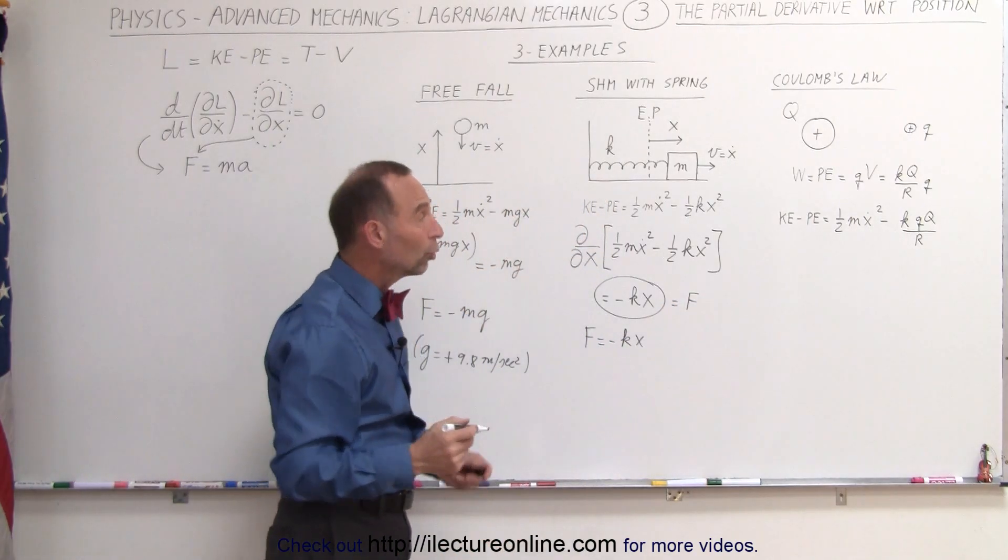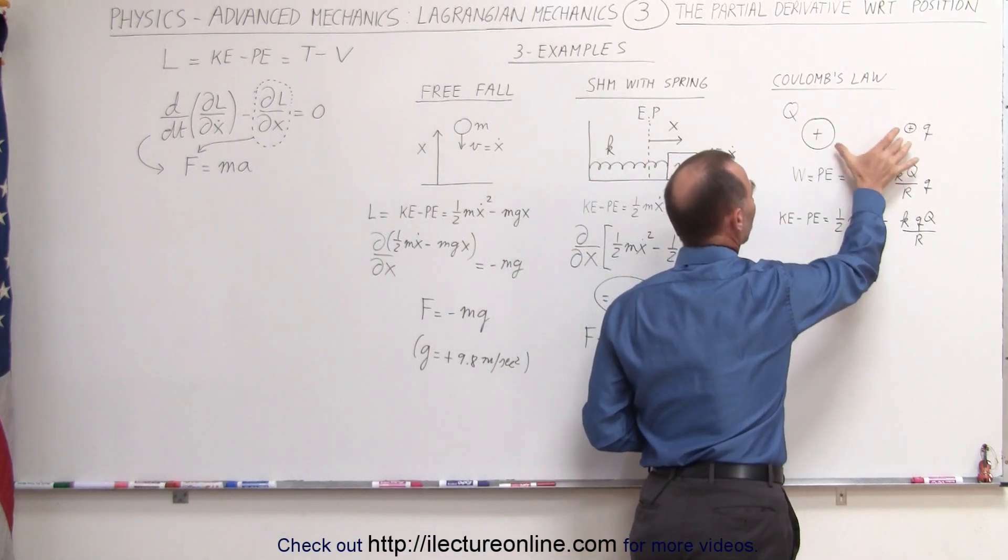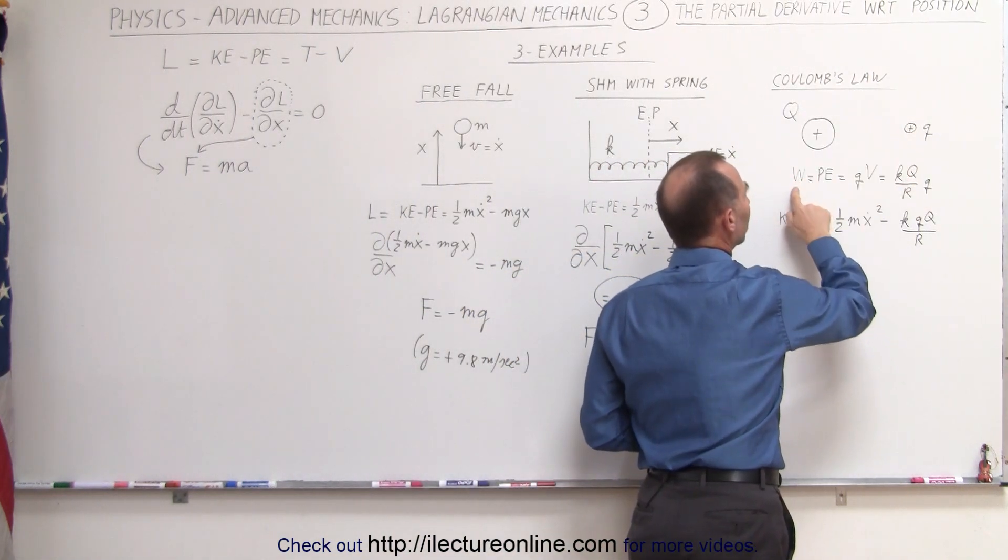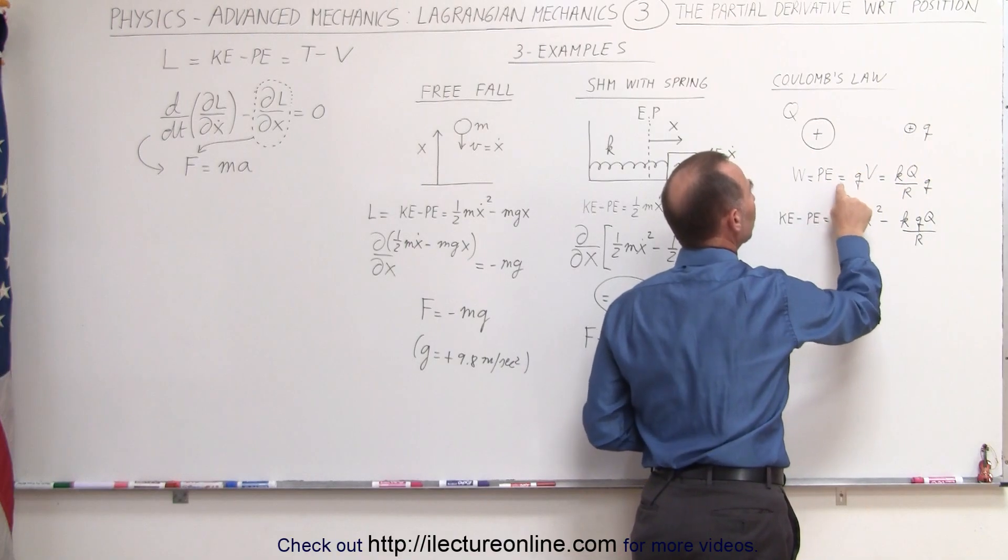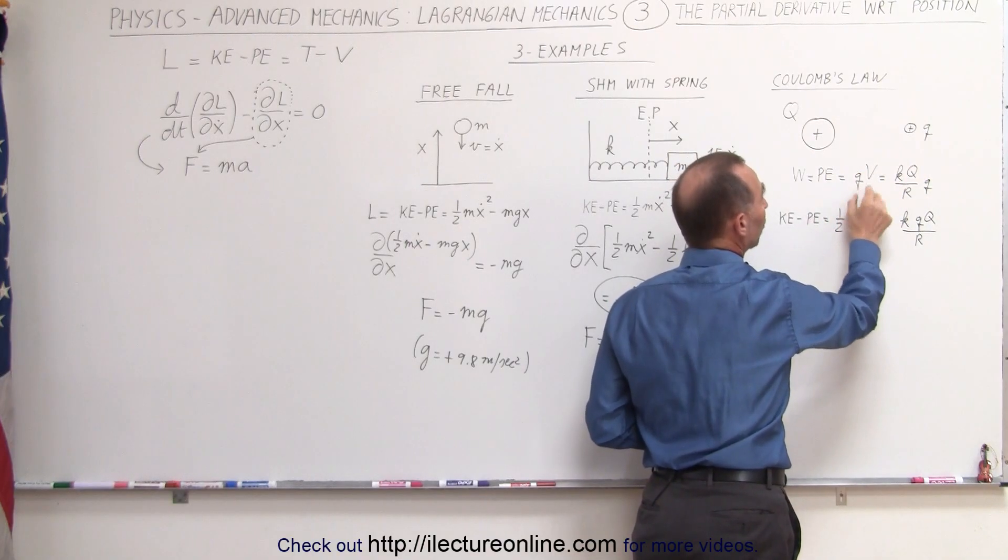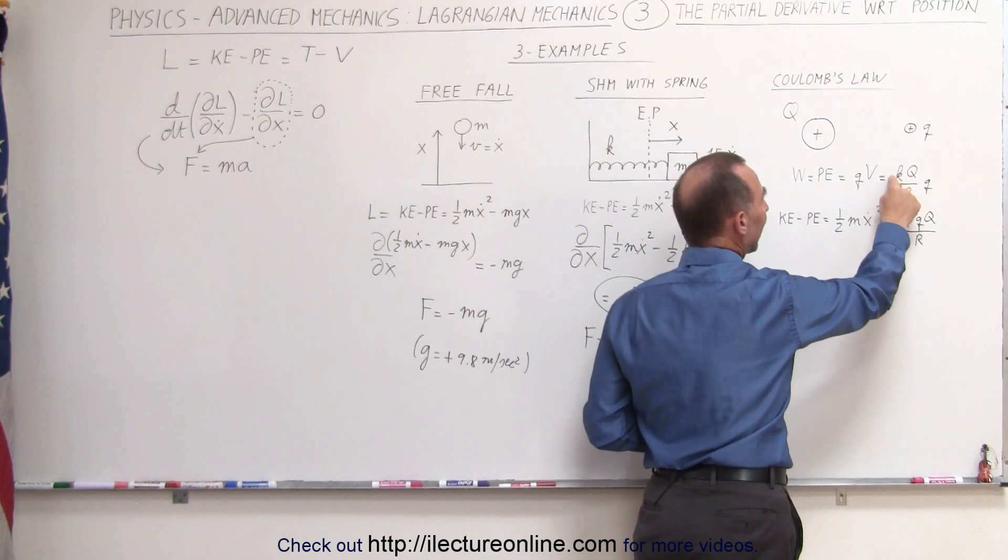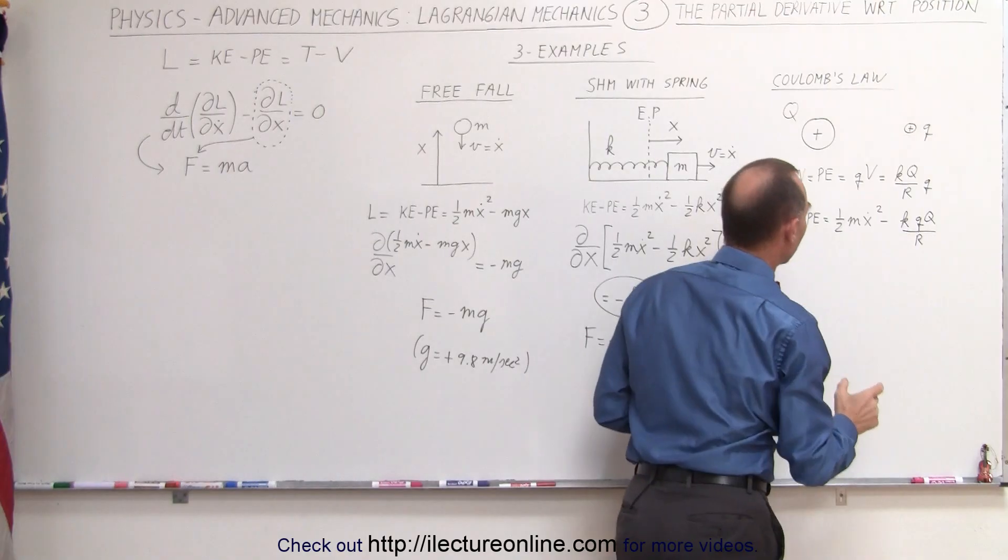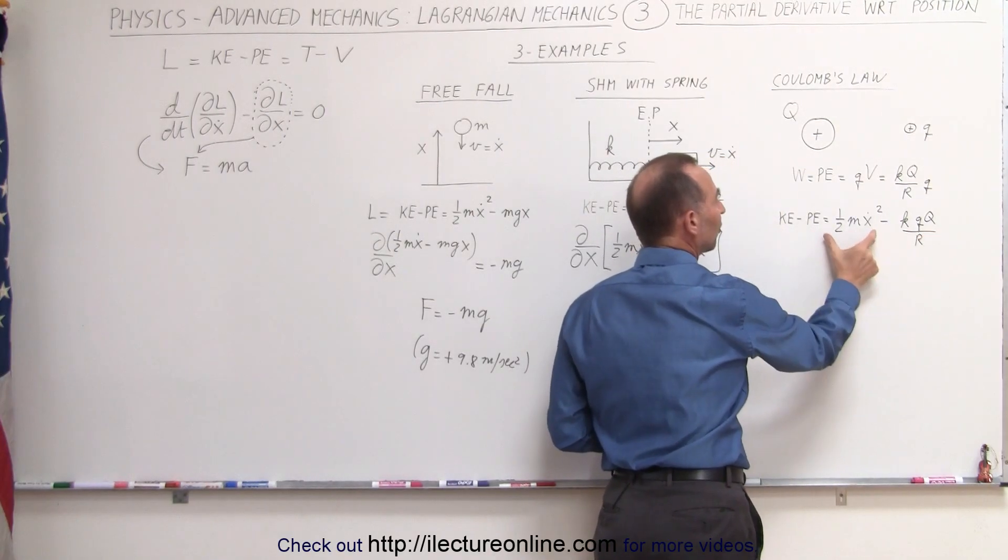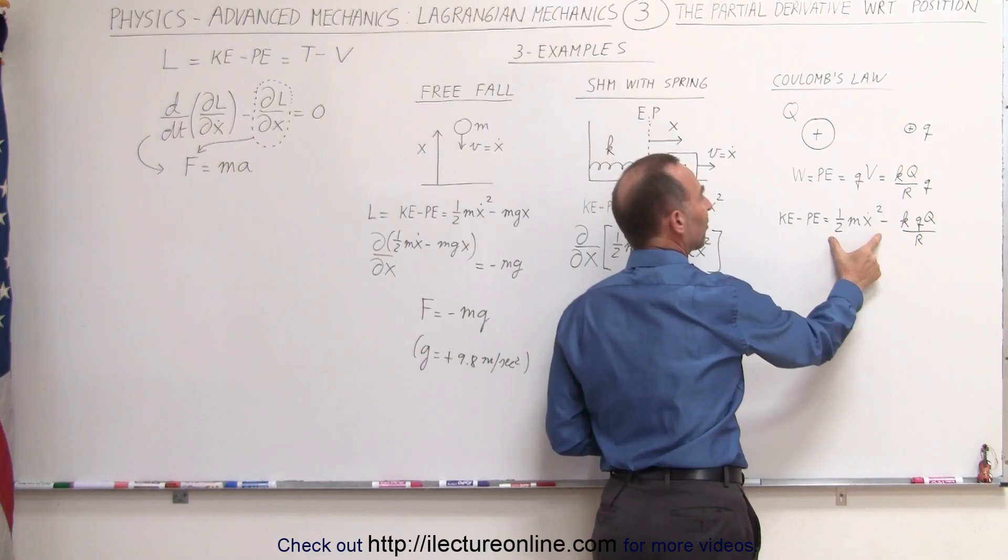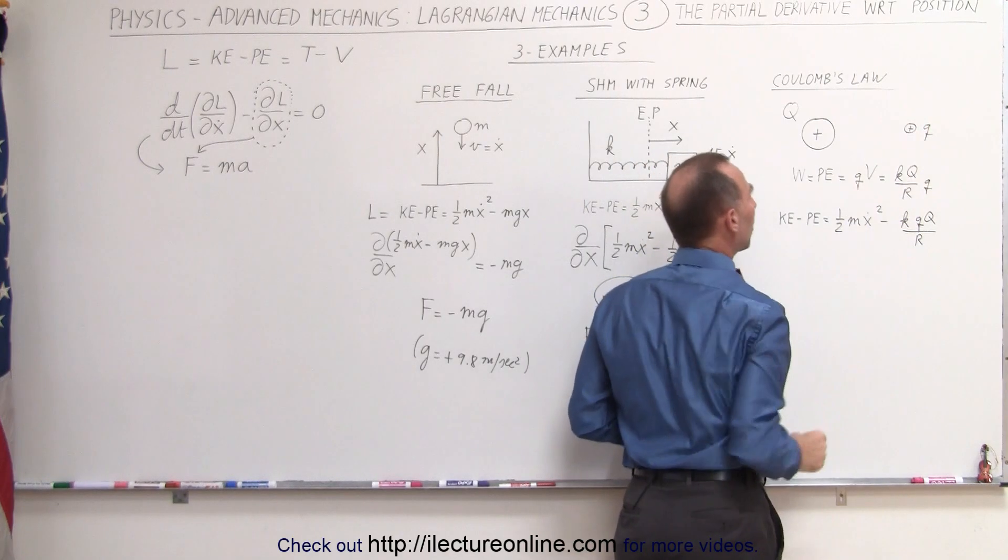And finally, let's look at Coulomb's law. Here we have a large charge and a small test charge. They're both positive. The work done to place that small test charge here is equal to the potential energy, which is equal to the charge or the test charge times the potential. The potential is equal to kq over r. Therefore, the kinetic energy minus the potential energy can be written as this. This, again, is the kinetic energy, one-half mv squared. And this would be the potential energy stored in the small test charge.